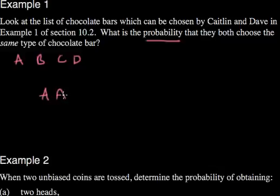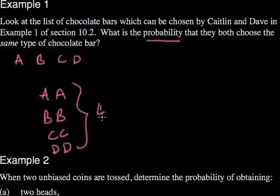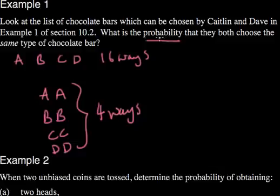So we could have had an A and an A, or a B and a B, or a C and a C, or a D and a D. And here we have four different ways of getting the same chocolate bar, but out of how many ways? You may remember that there were four different ones for A, four different ones for B, and so on, and there were 16 ways in total. So therefore the probability that they both choose the same type would be four out of 16.